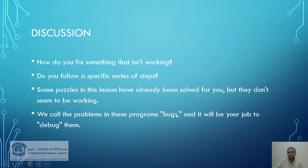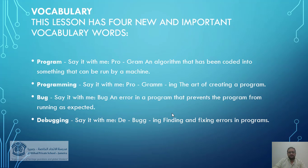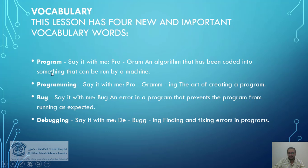It will be your job to debug them. This lesson has four new and important vocabulary words. The first one is "program." An algorithm that has been coded into something that can be run by a machine — not only a computer, but also a robot, a car — all these things are called a machine. That is what "program" means.